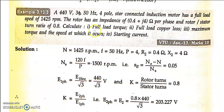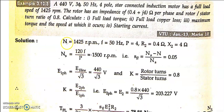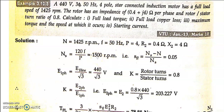Let us begin. First, write the data: full load speed n = 1425 rpm, f = 50 Hz, p = 4, r2 = 0.4 ohm, x2 = 4 ohm. Calculate synchronous speed: ns = 120f/p = 120×50/4 = 1500 rpm. Now calculate full load slip: sfl = (ns − n)/ns = (1500 − 1425)/1500 = 0.05.